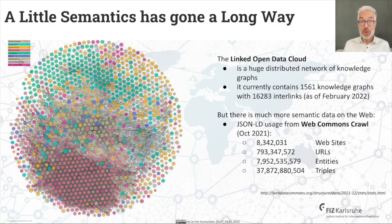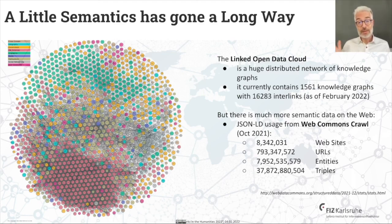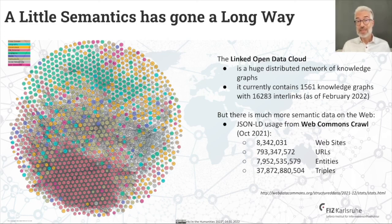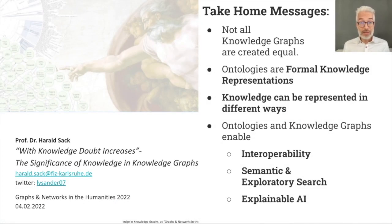You can see this in the Linked Open Data cloud, which is constantly growing. Looking at the latest results of the Common Web Crawl, there are millions of websites now using JSON-LD as the main format in the web for expressing RDF and semantic data — which amounts to almost 40 billion triples of knowledge out there that you might use.